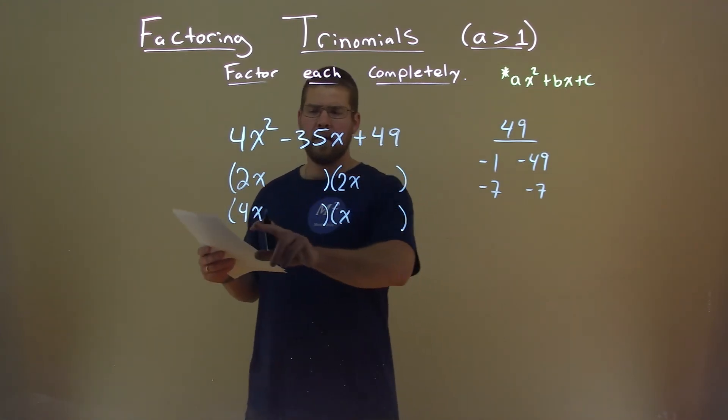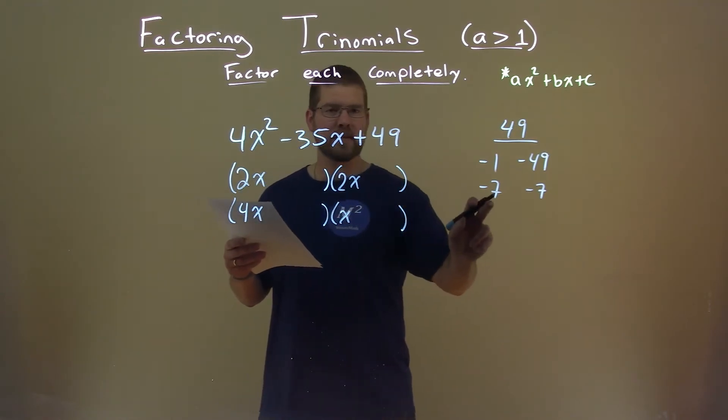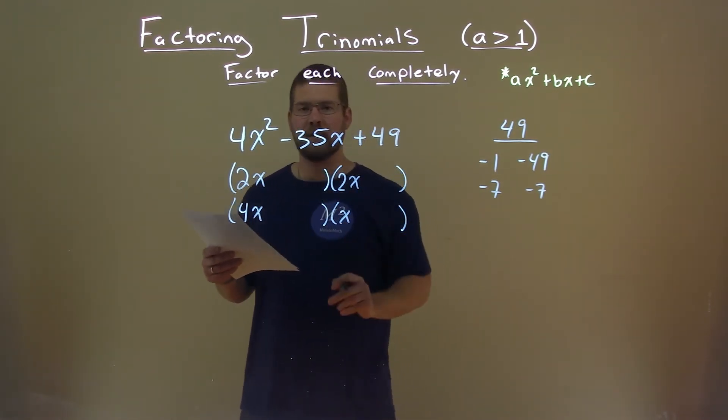So if we tried that, 4 times a negative 7 is a negative 28, and then x times a negative 7 is a negative 7x. We add those together, and we get negative 35.